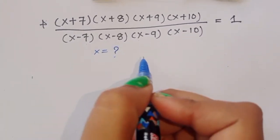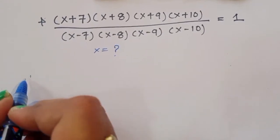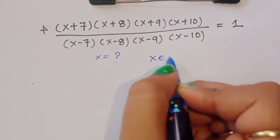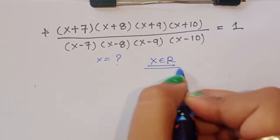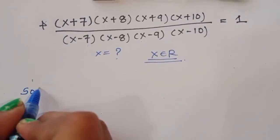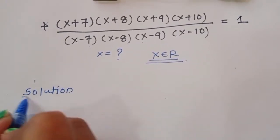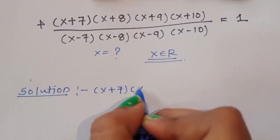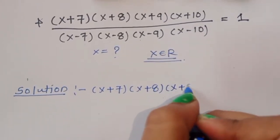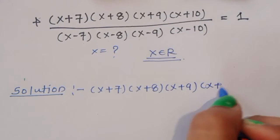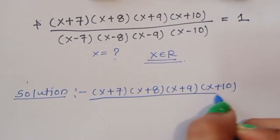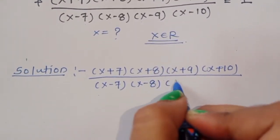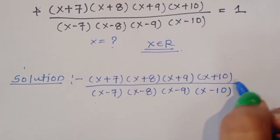x is equal to what? Let's see the solution. The condition is that x is a real number — x belongs to ℝ. Now what is given: (x+7)(x+8)(x+9)(x+10) divided by (x-7)(x-8)(x-9)(x-10) is equal to 1.